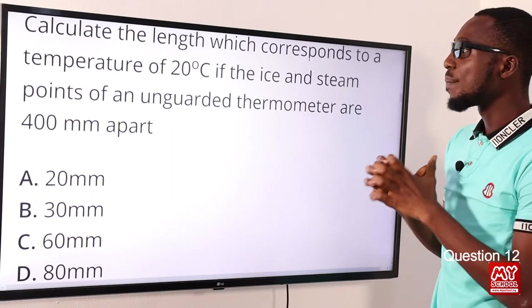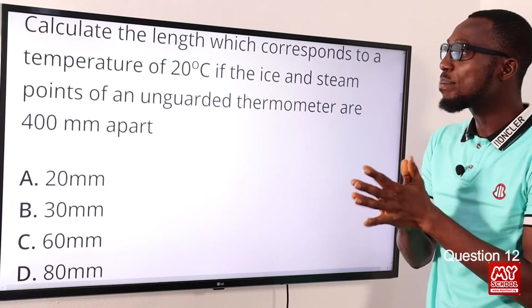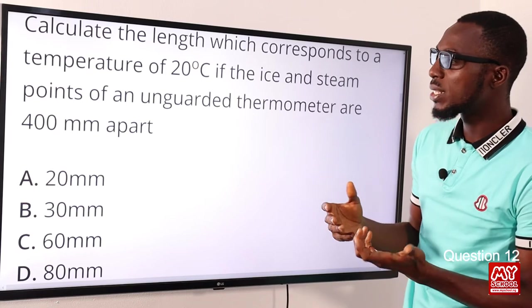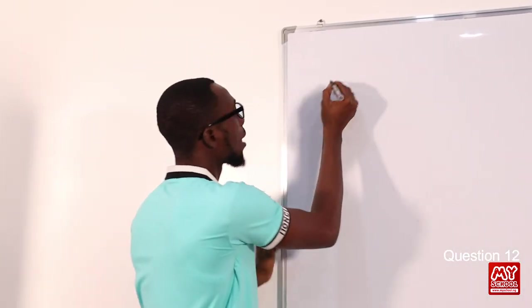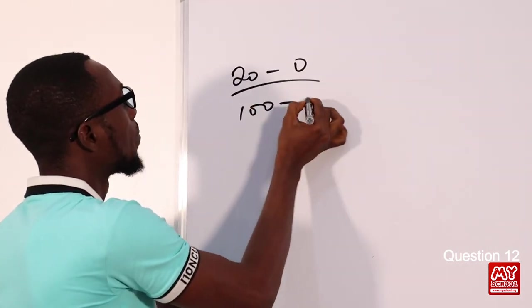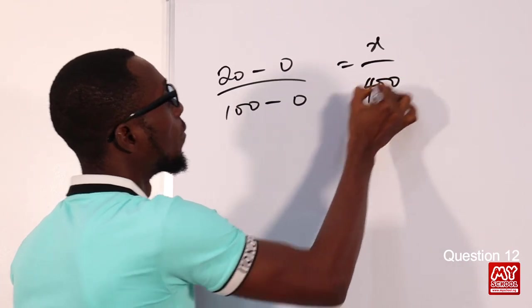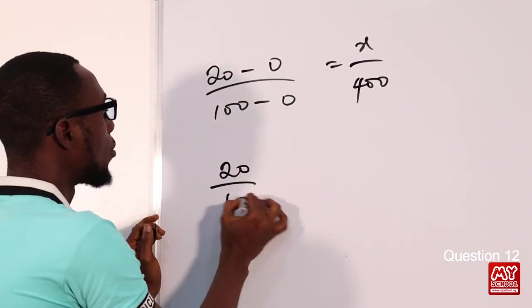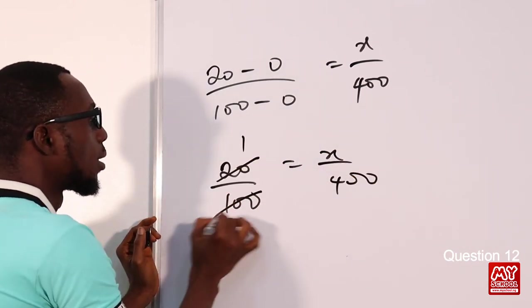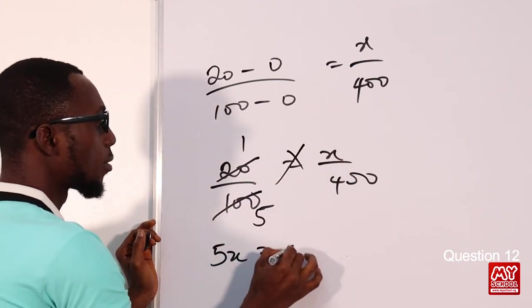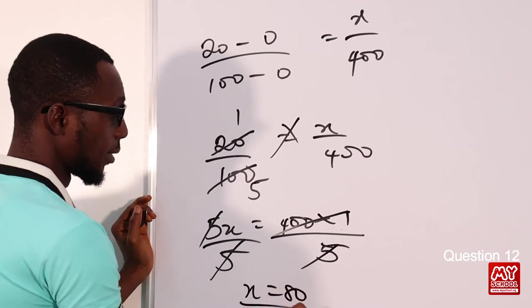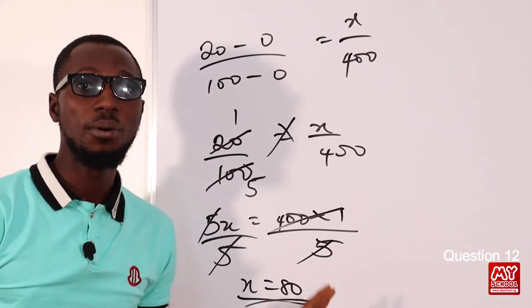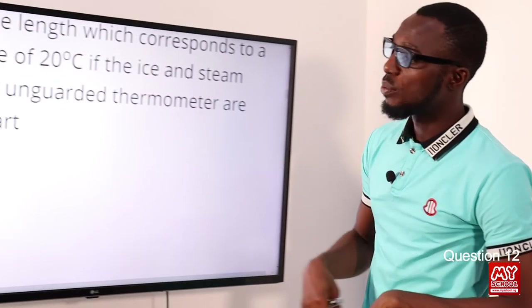Question twelve: calculate the length corresponding to 20°C if the ice and steam points of an ungraduated thermometer are 400 mm apart. Using the formula: (θ − 0) / (100 − 0) = x / 400, so 20/100 = x/400. Cross-multiplying: x = 80 mm. Option D is the correct answer.